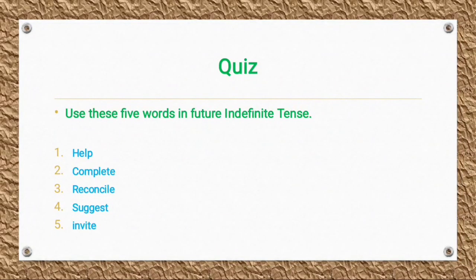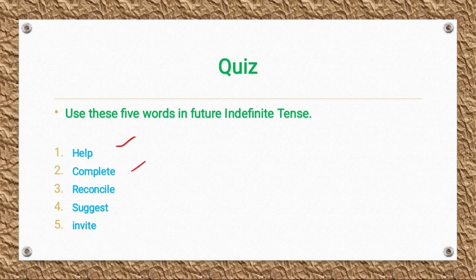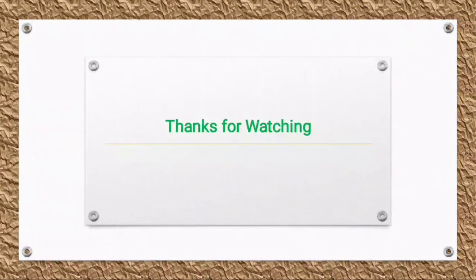Here is a short quiz for you all. Use these five words in Future Indefinite Tense and make sentences, then write them in the comment section: help, complete, reconcile, suggest, and invite. I hope this video has been helpful. Thanks for watching — if you found it useful, please like, share, and comment.